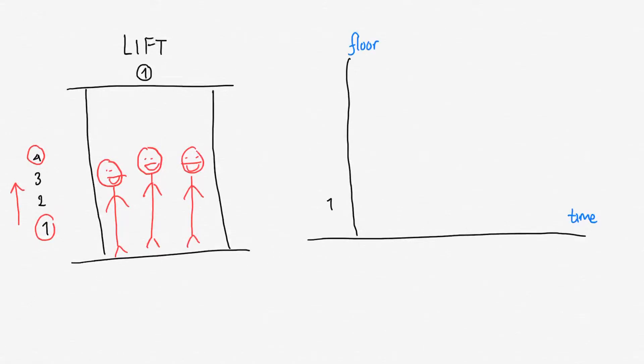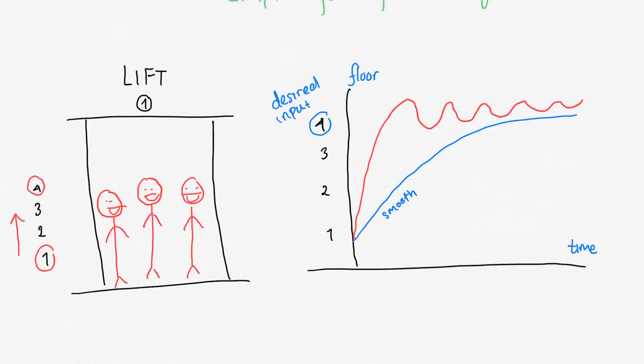As we can see here in the axis, the x-axis is time and the y-axis is the floor. Our desired input is the fourth floor. When we give our system our desired input, we see that the system, in the first case, behaves smoothly. This is a pretty good behavior because the elevator does not move too quickly or oscillate. Just imagine that you are inside an oscillating elevator that moves up and down rapidly.